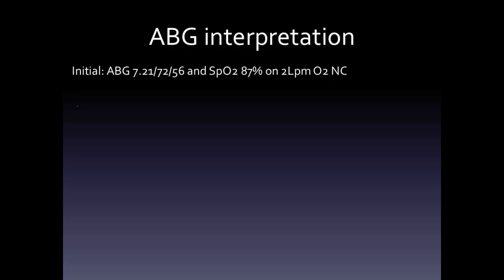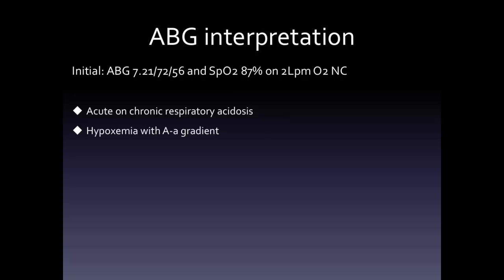From the initial ABG, his pH is less than 7.4, so this is an acidemia. His PCO2 is 72, about 30 above what a normal PaCO2 should be. Considering the compensation of the pH, this is somewhere between an acute and chronic compensation, so the interpretation is an acute and chronic respiratory acidosis. The oxygenation shows low PaO2 despite supplemental oxygen, so this is hypoxemia with an A-a gradient.